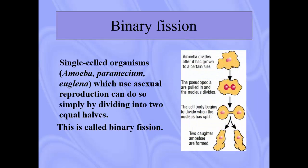Binary fission occurs in single-celled organisms like amoeba and paramecium. They use asexual reproduction by just dividing into two equal halves — this is called binary fission. Within cells, this process is called mitosis, but because this is an actual organism, we call it binary fission so we don't get confused between the two.